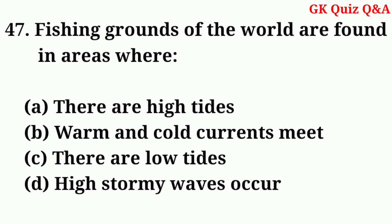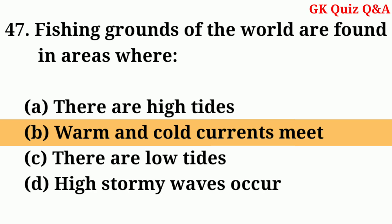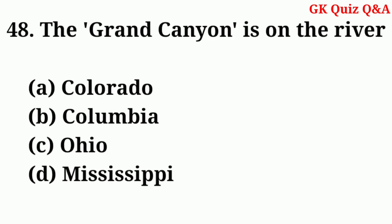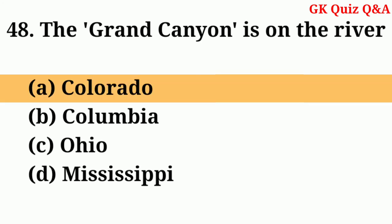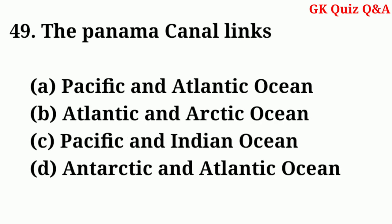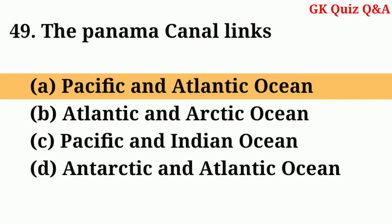Fishing grounds of the world are found in areas where? Answer: B — Warm and cold currents meet. The Grand Canyon is on the river? Answer: A — Colorado. The Panama Canal links? Answer: A — Pacific and Atlantic Ocean.